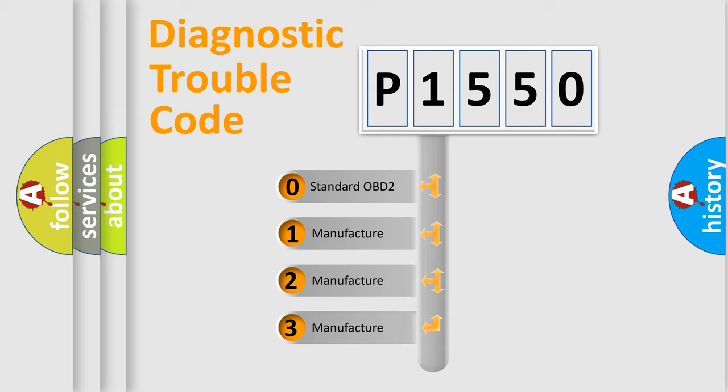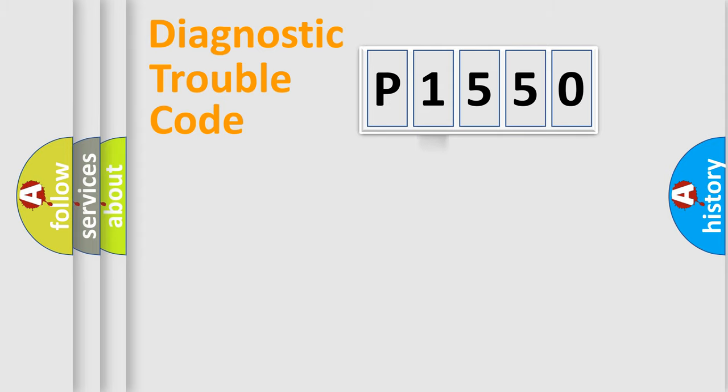If the second character is expressed as zero, it is a standardized error. In the case of numbers 1, 2, 3, it is a more precise expression of the car-specific error.